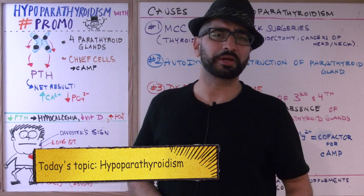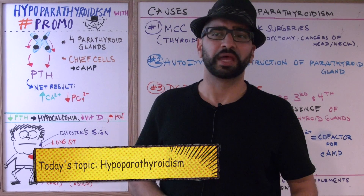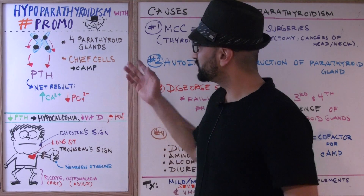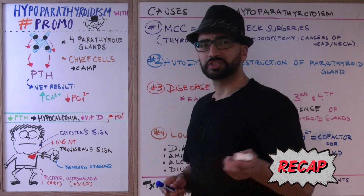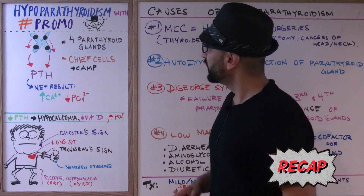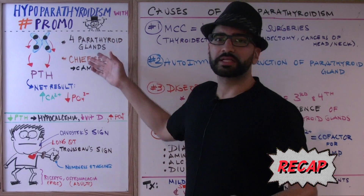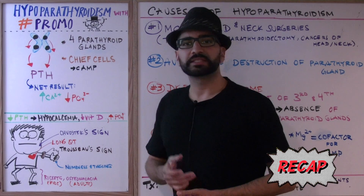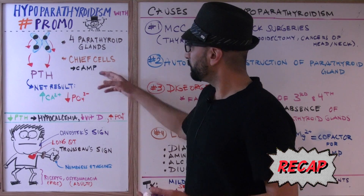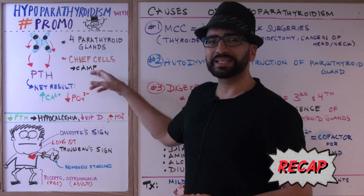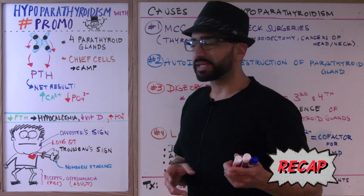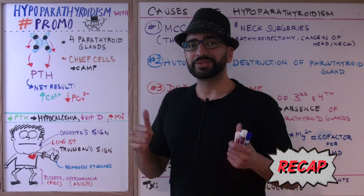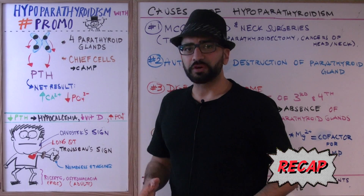Today we're going to talk about hypoparathyroidism. Before we get into the signs and symptoms, let's do a quick recap. We have four parathyroid glands. The chief cells synthesize and secrete parathyroid hormone, which works through the cyclic AMP signaling pathway. The net result of PTH is to increase calcium levels and decrease phosphorus levels.